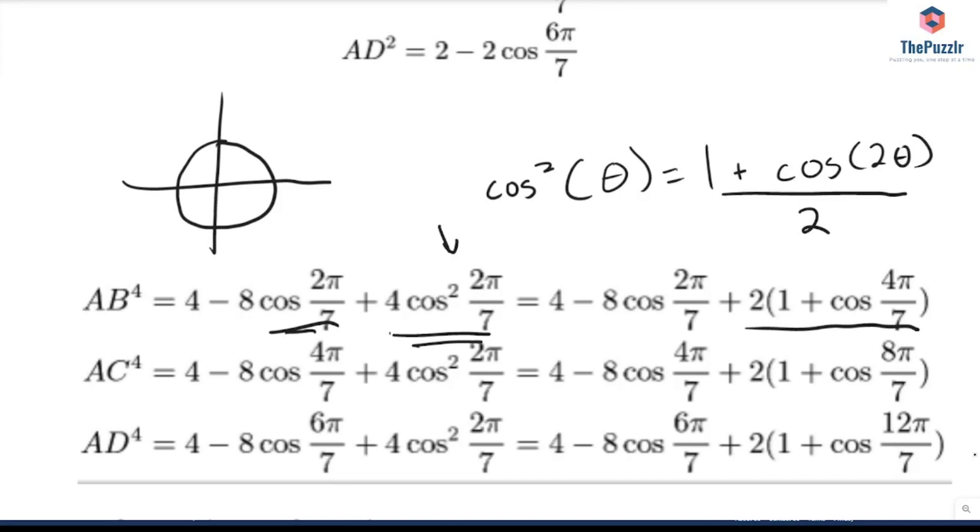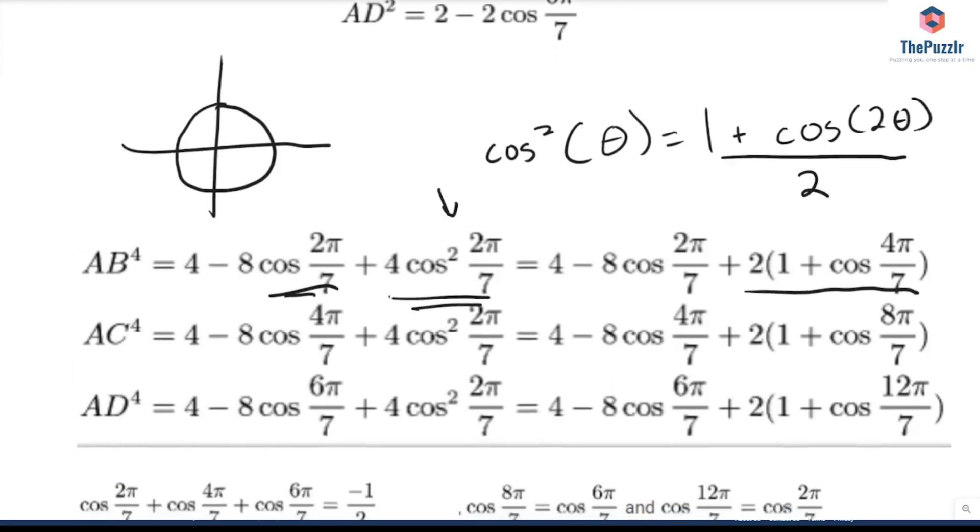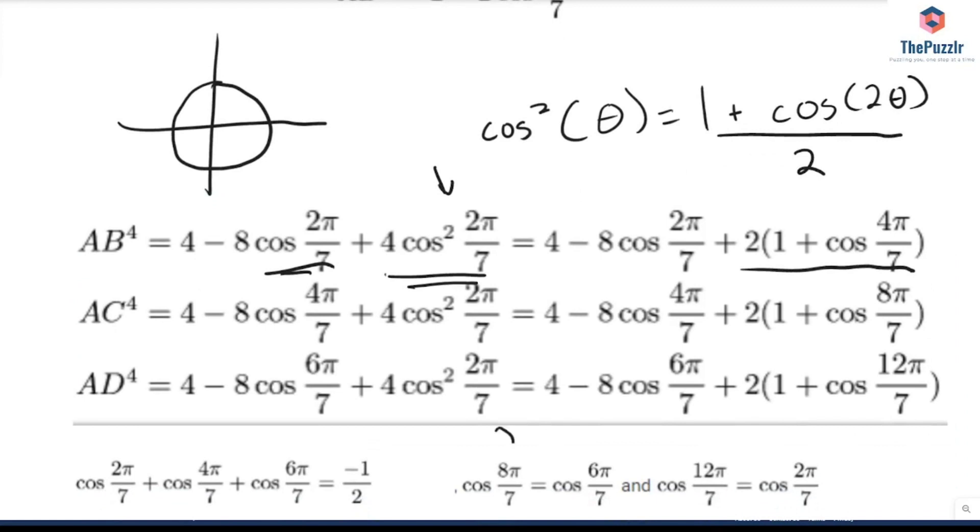So the way we're going to do that is we're going to notice a lot of symmetry. For example, if I scroll down a bit, we have that cosine of 8π over 7 is equal to cosine of 6π over 7. 8π over 7 is somewhere right here. And 6π over 7 is somewhere right here. So those two angles, when you're taking the cosine of them, those are the same because you're just reflecting it over the x-axis.